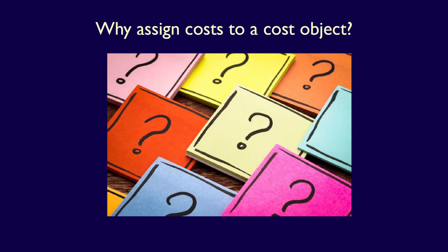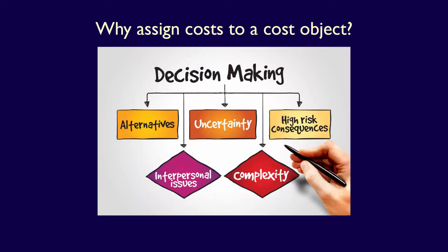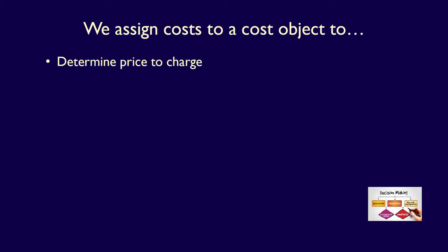Why do we need to define a cost object and then accumulate costs for that cost object? Because managers need information about costs in order to make decisions — like what price to charge customers for goods or services. Without an understanding of how much something costs, we can't determine the price we would sell it for. We need to know the cost because otherwise we can't determine how profitable the cost object is. How profitable is the dancing bear? We only know that if we know the selling price and we accumulate all the costs of producing the dancing bear.